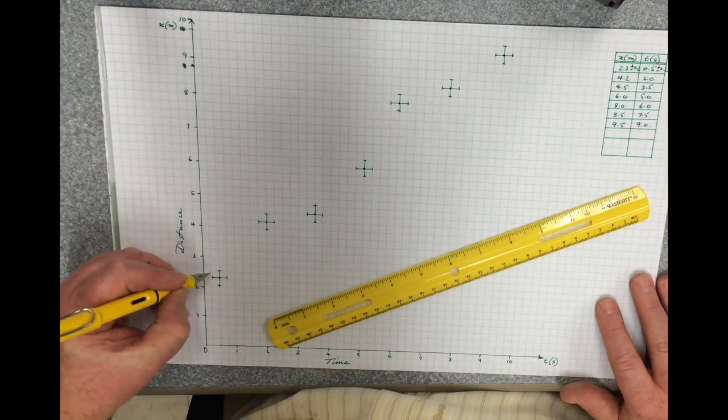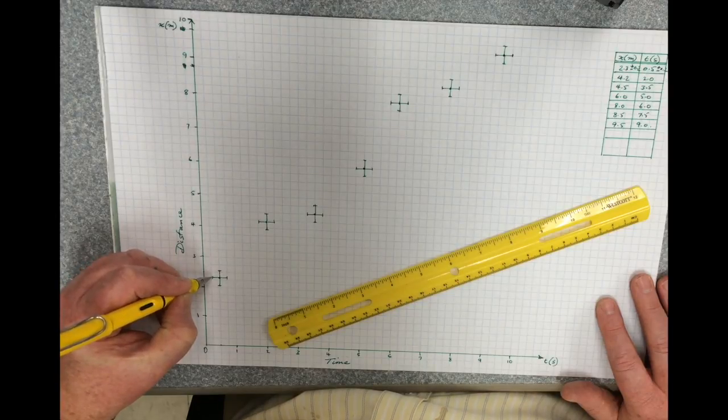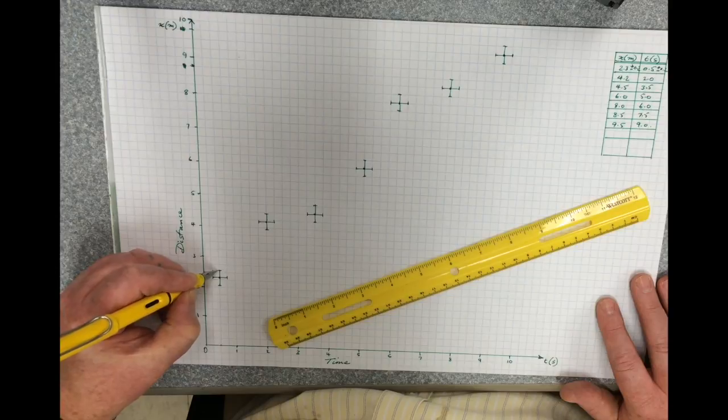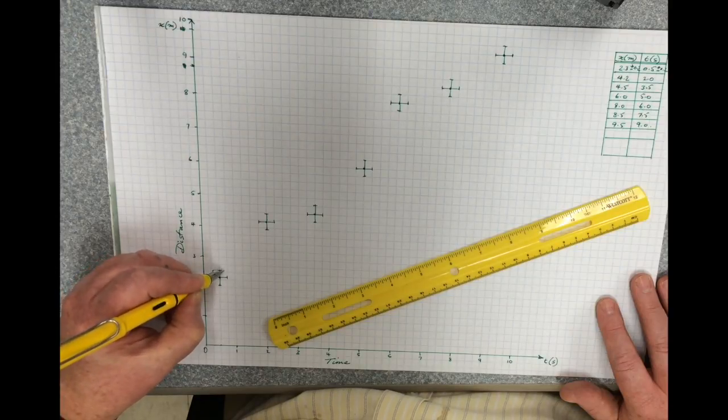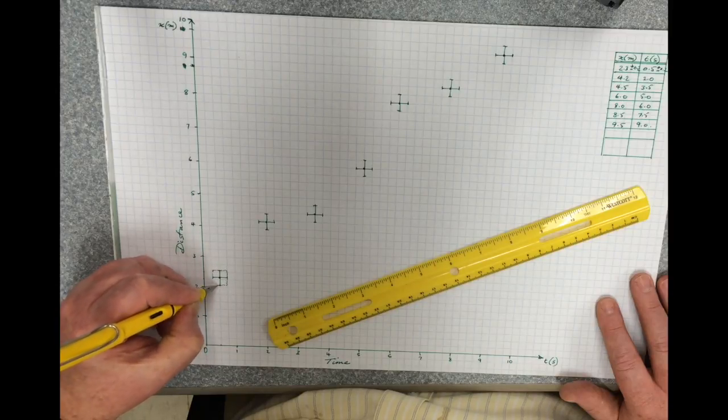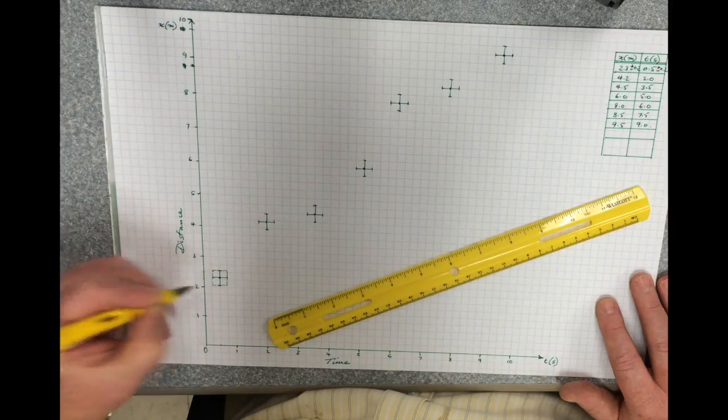Now when you're looking at something like this, what do these error bars mean? It means that if I draw, I'm going to draw in a little box here just so you can see it, it means that the actual data point can be anywhere inside that box of the errors.